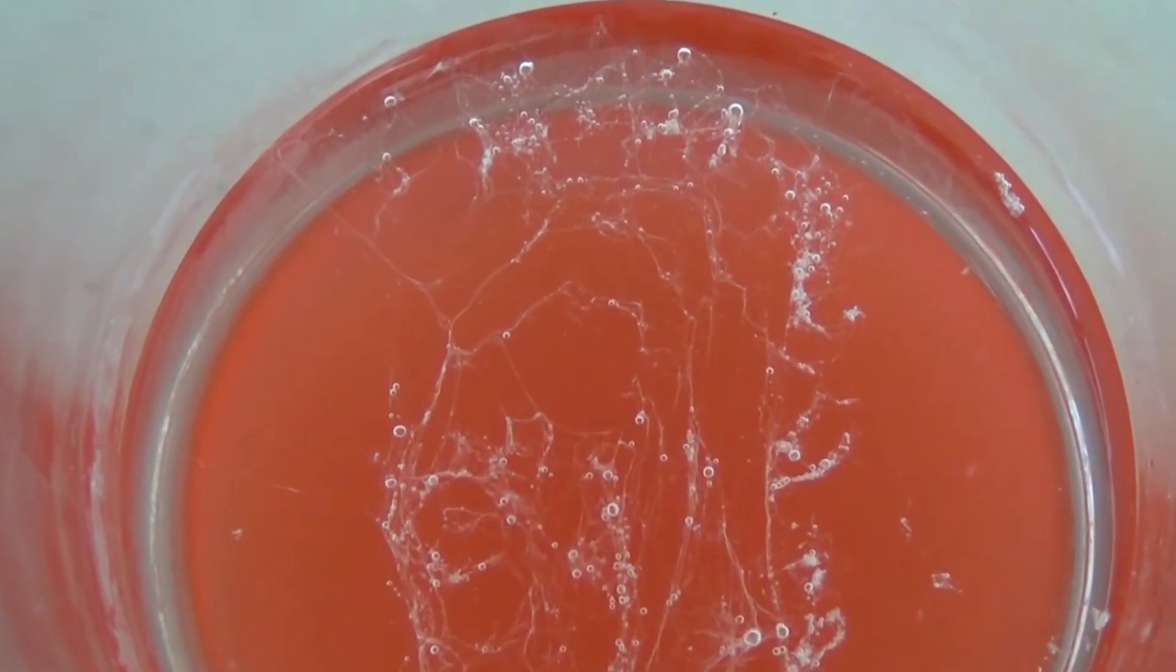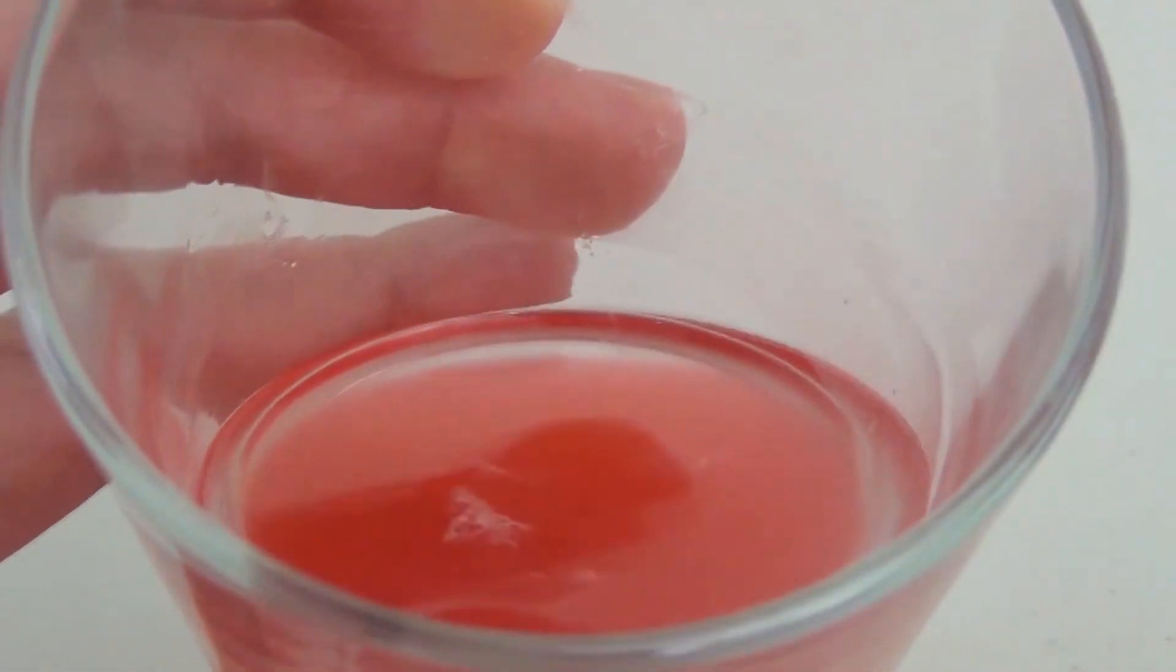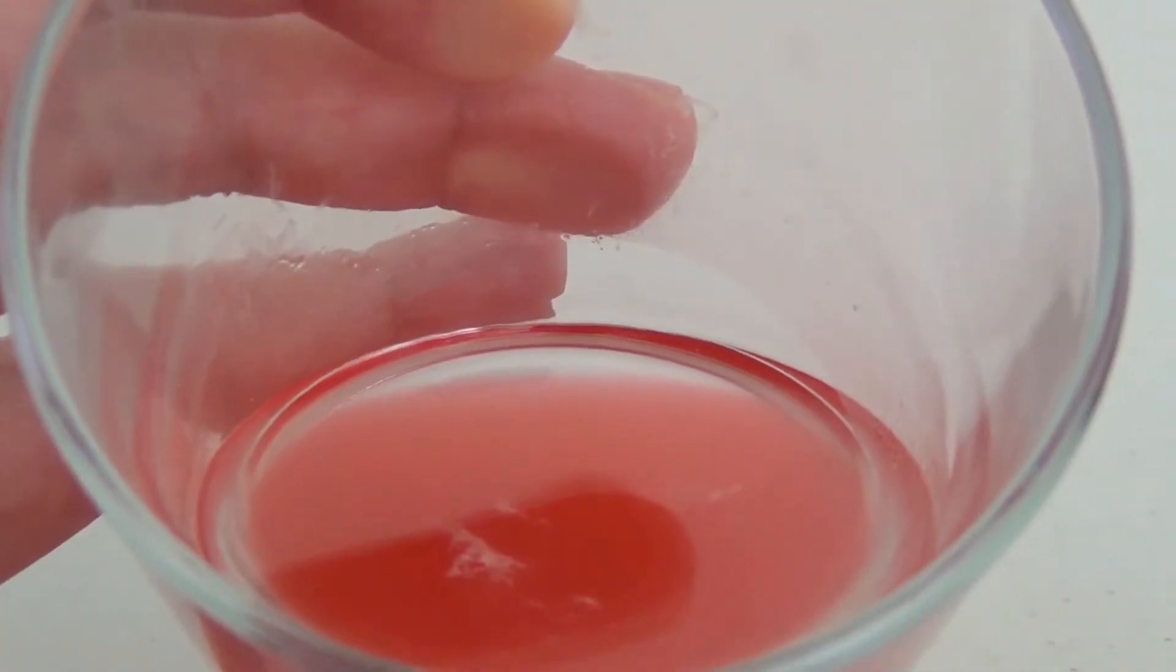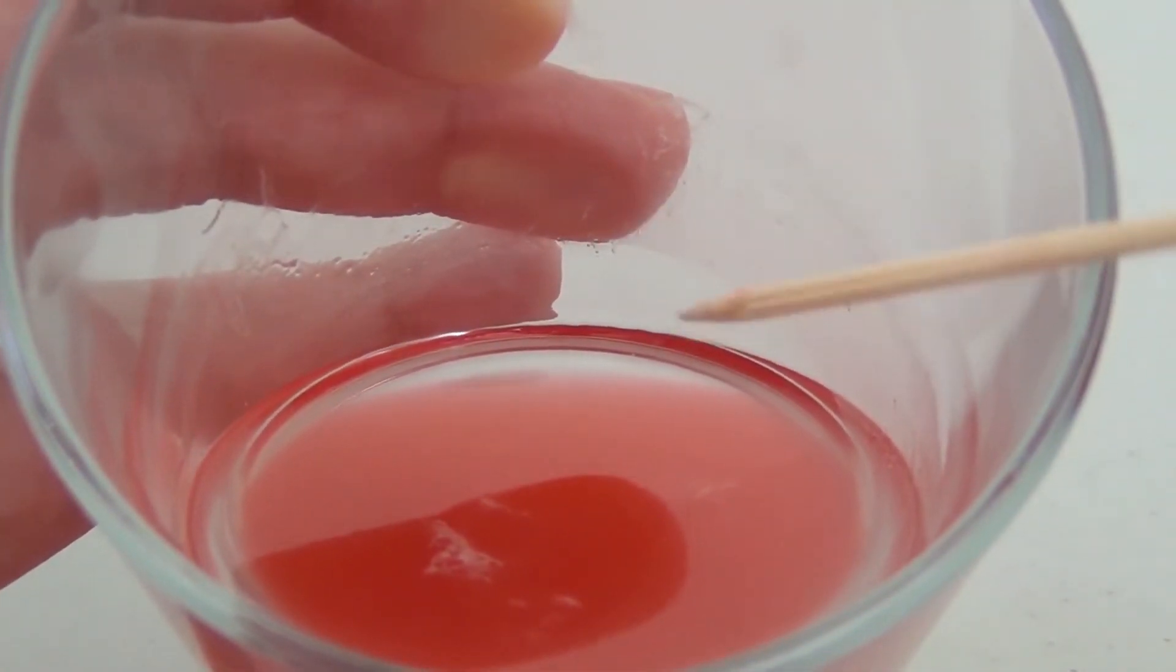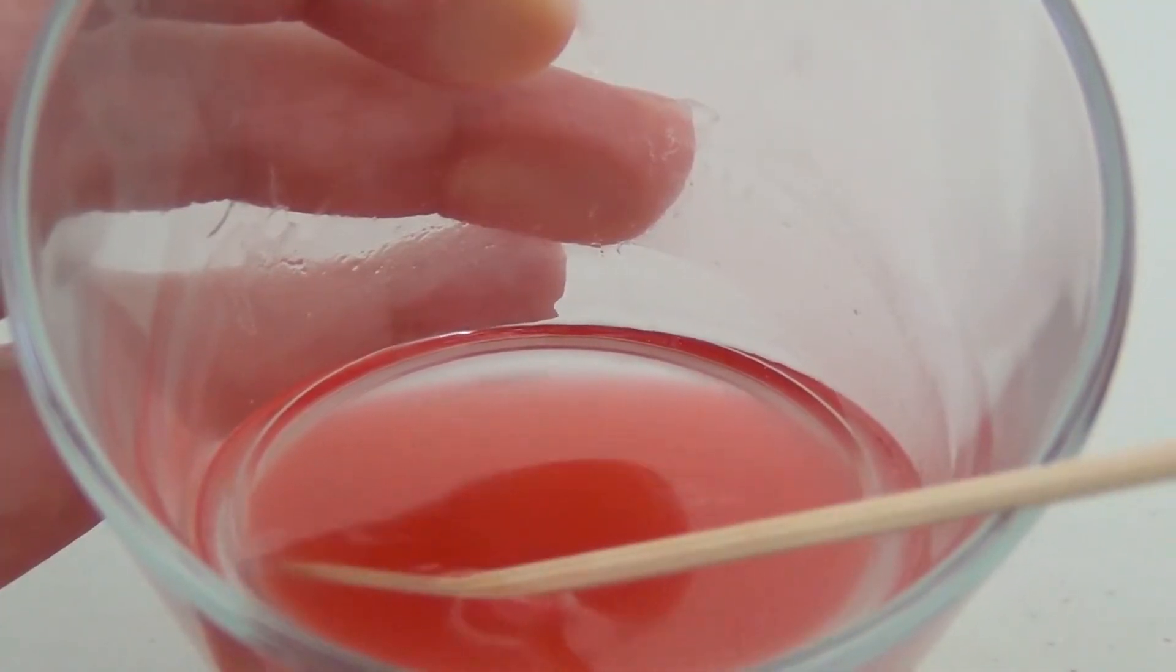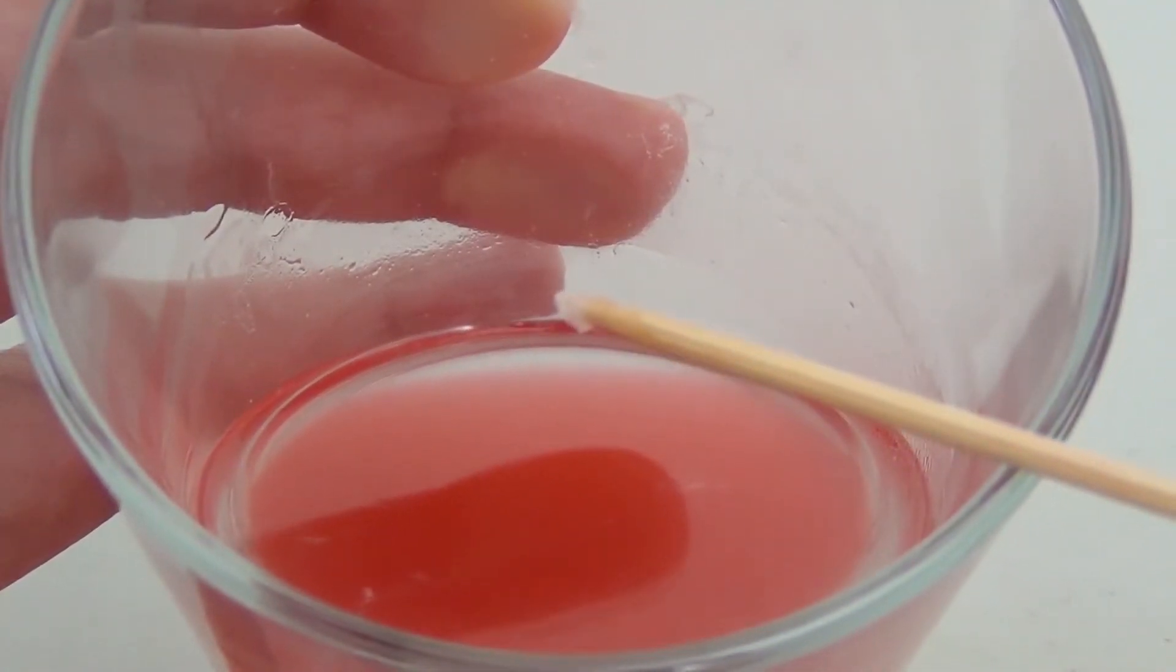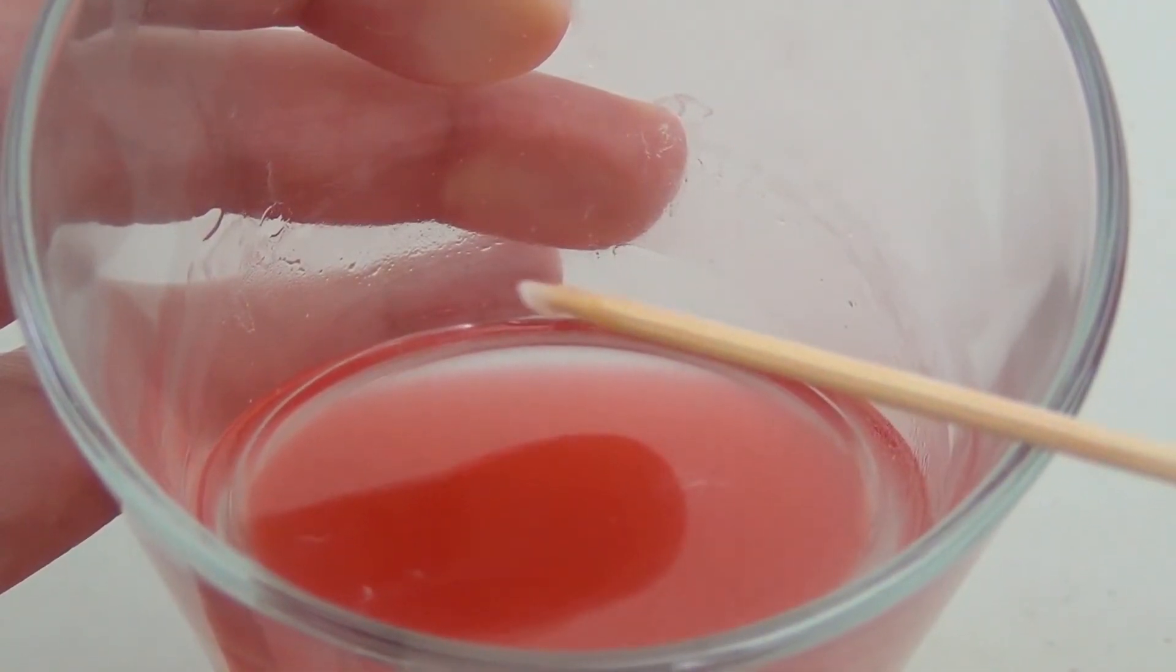So the little strands you're seeing form in the alcohol layer are DNA. After a couple of minutes, if you look at the top of the glass, you're going to notice some strands forming. That's DNA. So if you grab your skewer, you can gently grab those strands and take them out. Congratulations! You have extracted DNA at home. This is so cool.